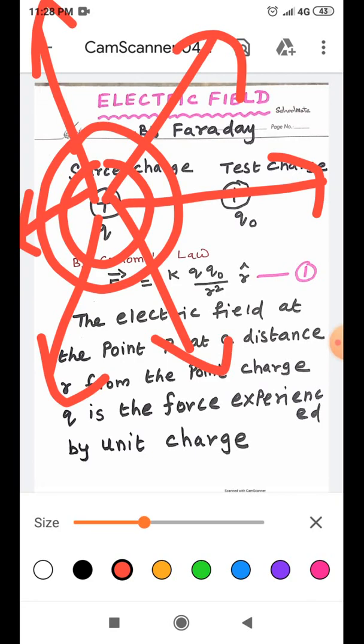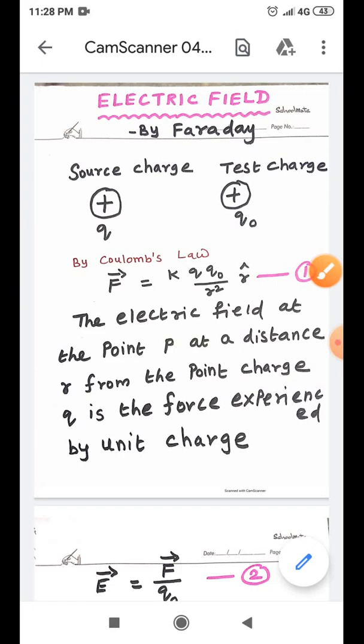So, it is purely occurring due to the presence of electric field around the source point charge. This is Michael Faraday, which is clear on the field theory. Okay students, suppose the distance between the two point charges is R.